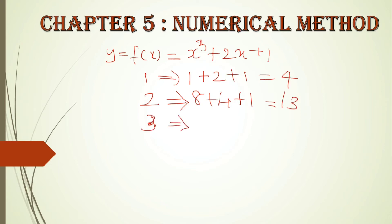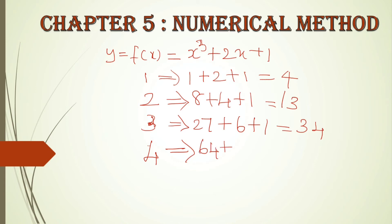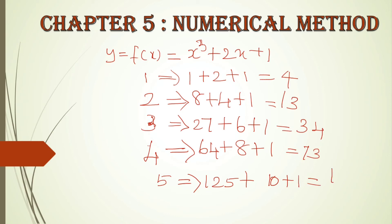For x = 3: 3³ = 27, so 27 + 6 + 1 = 34. For x = 4: 4³ = 64, so 64 + 8 + 1 = 73. For x = 5: 5³ = 125, so 125 + 10 + 1 = 136. Please work these out yourself first before checking the answers, so you don't waste time.